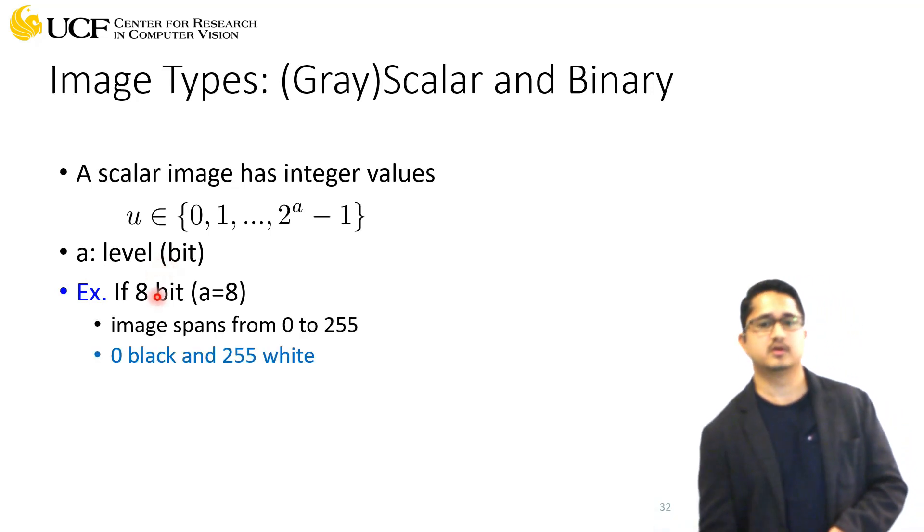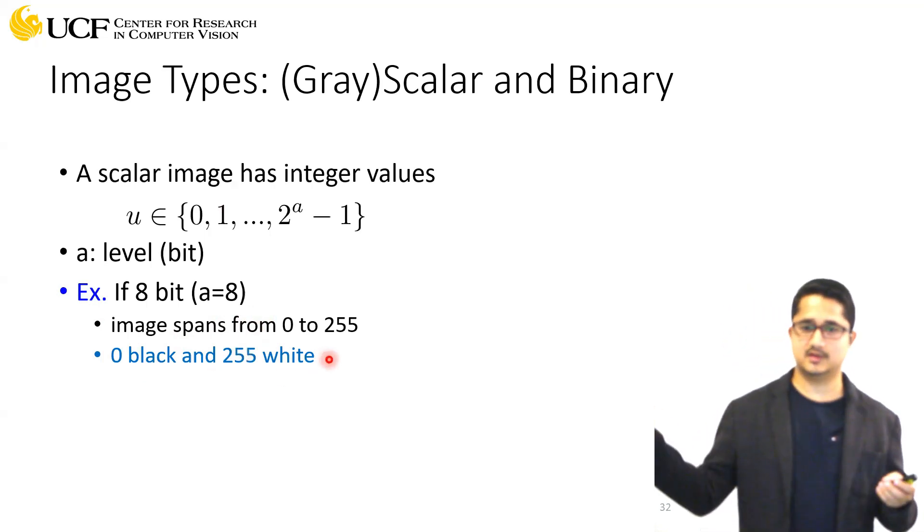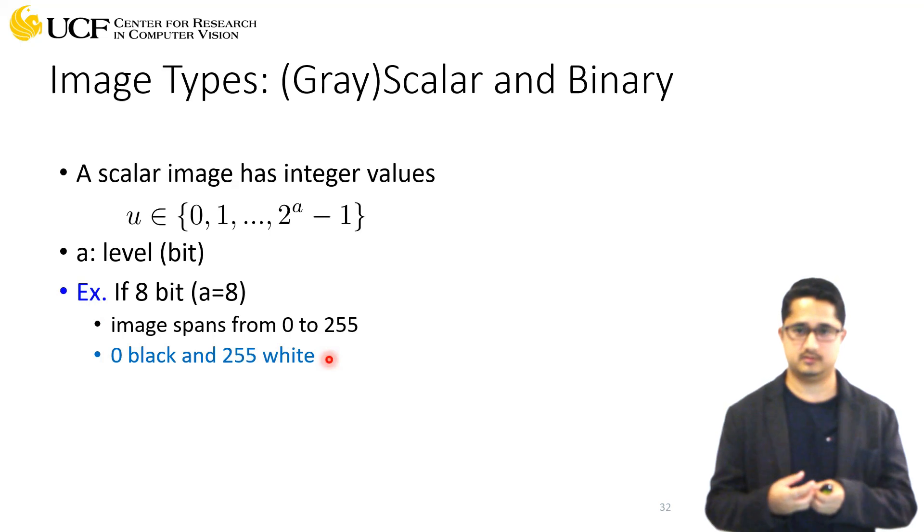Usually, images we capture these days using camera phones have a bit level of eight, meaning the range goes from zero to 255. Zero represents completely black—nothing is present there. 255 represents white.